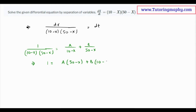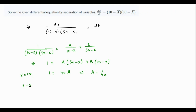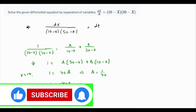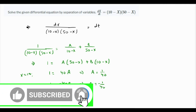If x is 10, then 1 equals (50 minus 10), which is 40, so 40A, meaning A equals 1 over 40. And if x is 50, then the first term becomes 0 and we get 1 equals (10 minus 50), which is minus 40B, so B equals minus 1 over 40.